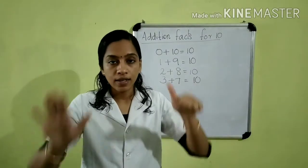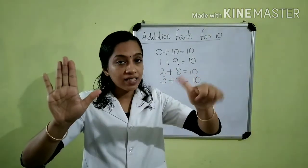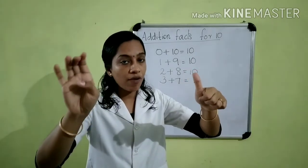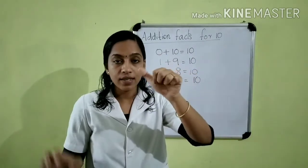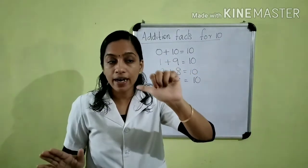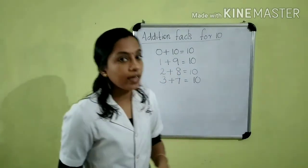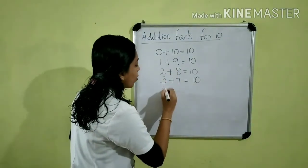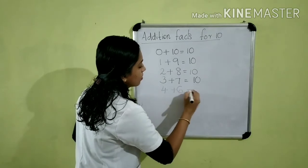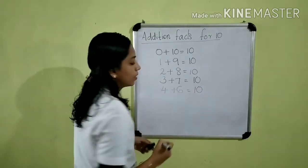Then tell me children, how many fingers are extended? 6. And how many fingers are folded? 4. So we can write, 4 plus 6 is equal to 10.